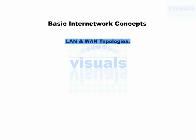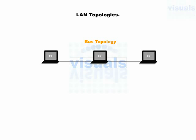We are starting from LAN topologies with bus topology. You can see these devices are connected to a single cable. When any of these devices sends data, this transmission can be seen by all the devices connected to this single cable. This topology is known as bus topology, and it forms the shape of a bus.